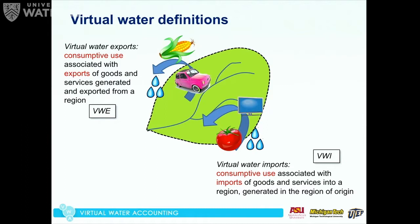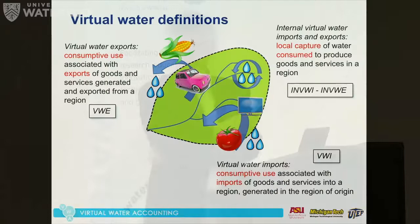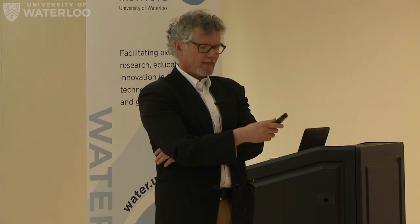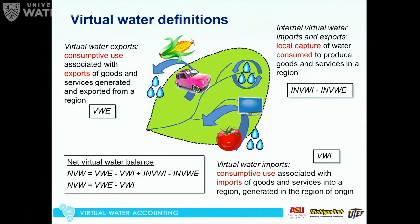Within the watershed, depending on scale, we can have substantial recycling — producing things where water is consumed but products stay within the same watershed. Usually those internal virtual water imports and exports cancel each other out, going to zero. Overall, our net water balance consists of virtual water exports minus imports. The internal exports and imports cancel each other out. Please feel free to ask questions or interrupt as we go along.